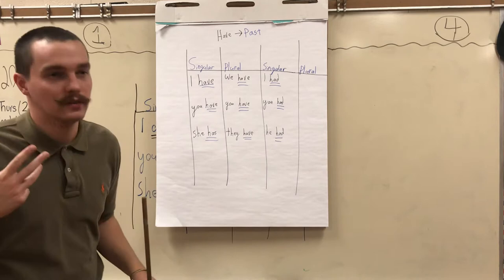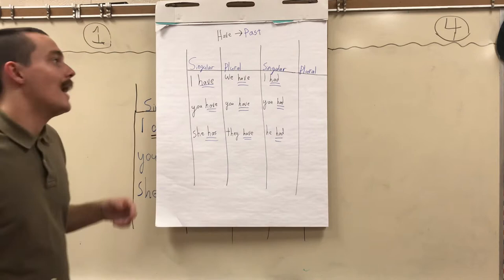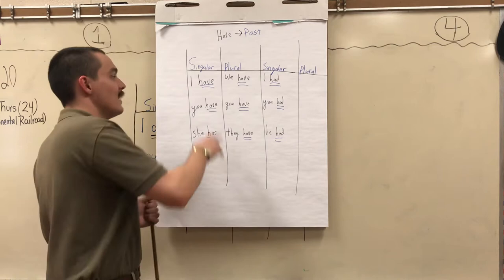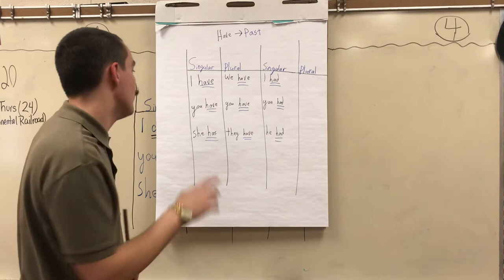I have a dog. We have a dog. I had a dog. Had here is implying that it happened in the past. Now, you have a dog. You have a dog. You had a dog. She has a dog. They have a dog. He had a dog.